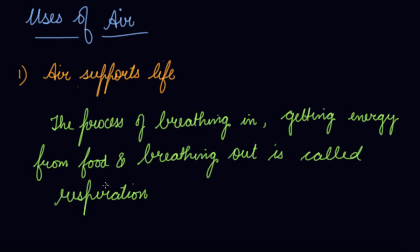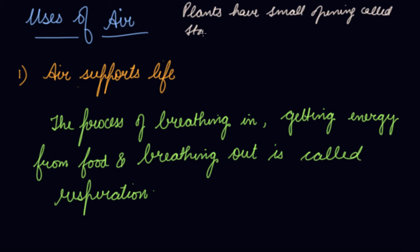We inhale oxygen and exhale carbon dioxide. Living things on land breathe oxygen; the air you breathe in through your nose goes into your lungs. Plants, on the other hand, intake carbon dioxide — a component present in the air — through small openings called stomata.